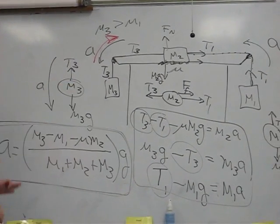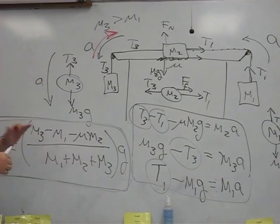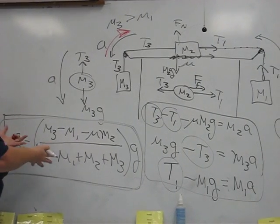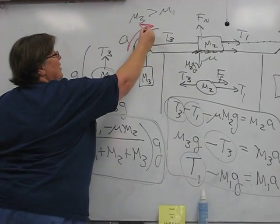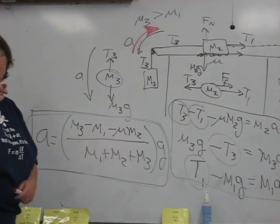We assumed it moved counterclockwise, and that set up all the signs, S-I-G-Ns, the way it did. But if, when we plug in values, we get a negative acceleration, then we will still have the same value, but the system would, in fact, move the other way.